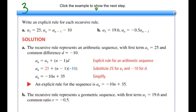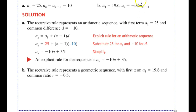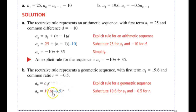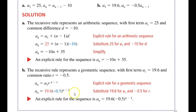For part B, multiplying tells me this is geometric. My first term is 19.6 and my common ratio is negative 0.5. I use the explicit formula for geometric sequences: a sub n equals a sub 1 times r to the power n minus 1. Plugging in: a sub n equals 19.6 times negative 0.5 to the n minus 1. There's no simplification needed, so I leave it as is. This is the explicit rule for this recursive rule.